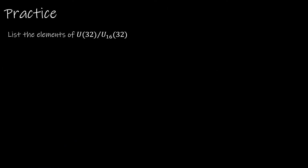Here's one more practice example. We're trying to find the elements of U32 mod U16(32). A good first step is to list all of the elements in each of those groups. U32 contains anything less than 32 that is relatively prime to 32.